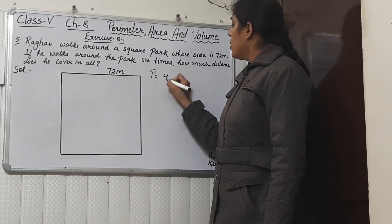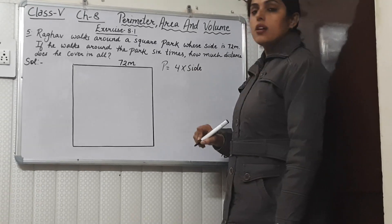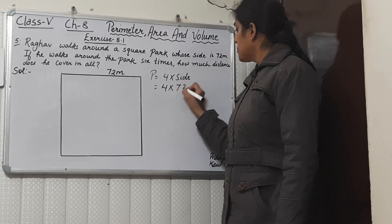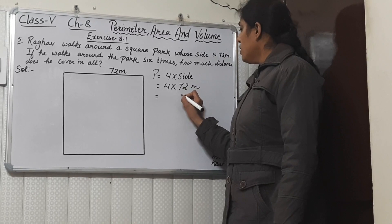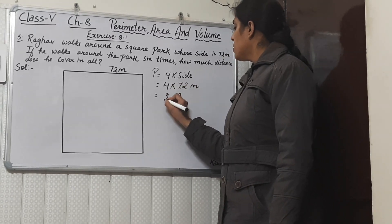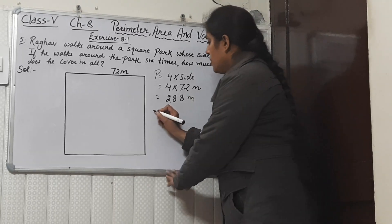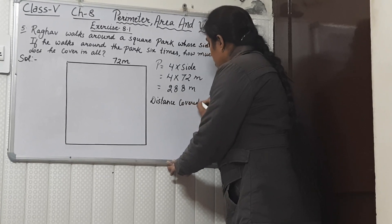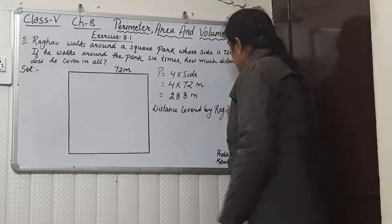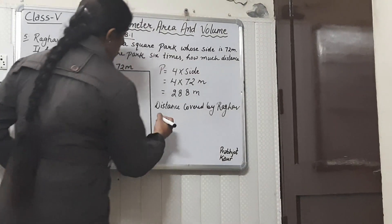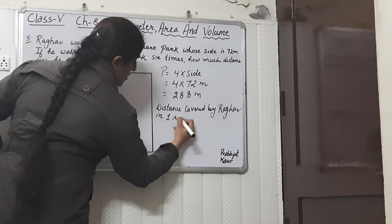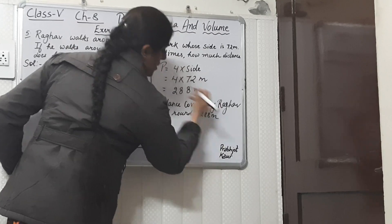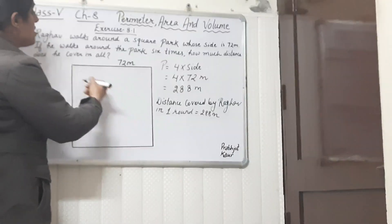For finding the distance covered in one round, we will find the perimeter of the square. Perimeter of a square is 4 × side. So this is 4 × 72 meters, which is 4 × 72 = 288 meters. The distance covered by Raghav in one round will be 288 meters.